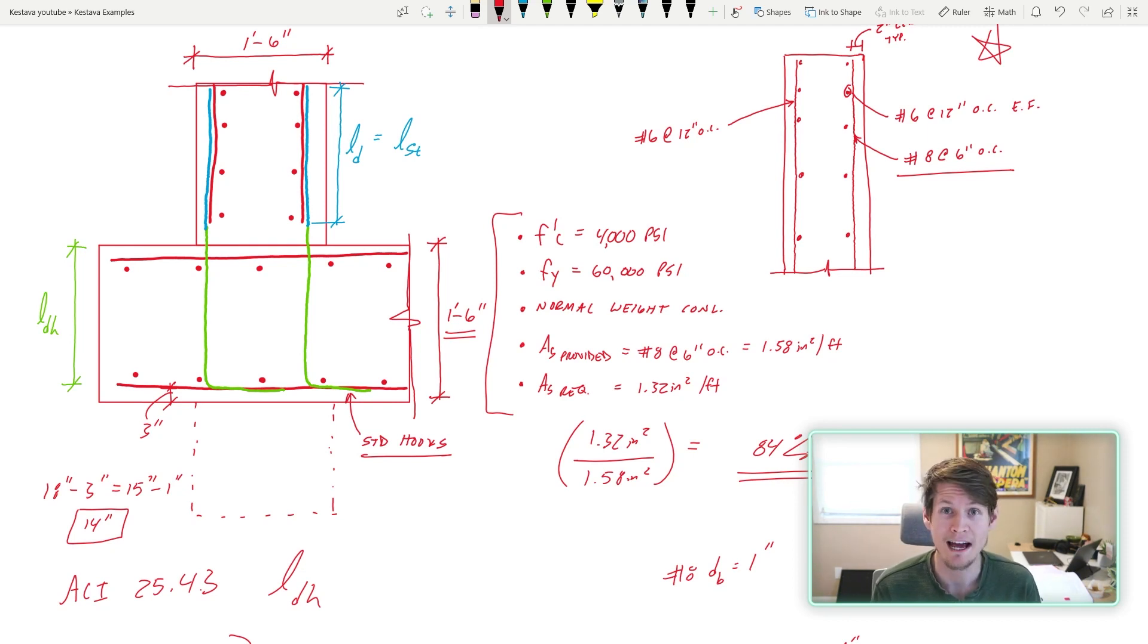The other thing I want to quickly point out that I kind of dodged today is we had our shear key in our previous design example and I totally just neglected it today. In reality you could develop a straight bar or even a hooked bar down into this key, but I just sort of neglected the shear key today because I think designing without a shear key is more applicable to more people's situations and the designs that they're doing.